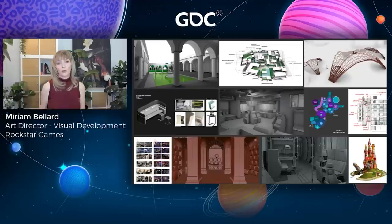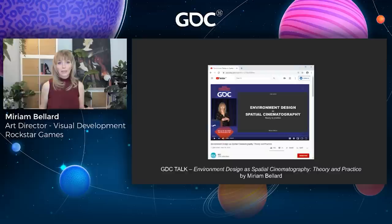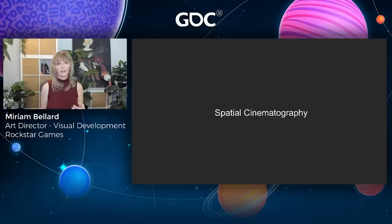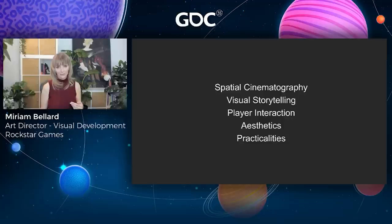Our role as a department is to make sure that designs are going to work for everybody — for game design, environment art, art direction, animation, AI, the narrative team, and so on. This talk is a companion to one I did a couple of years ago on environment design and spatial cinematography. When you are designing, you need to design for a number of different criteria: spatial cinematography, visual storytelling, player interaction, aesthetics, and practicalities. A good design is going to take all of these into account.